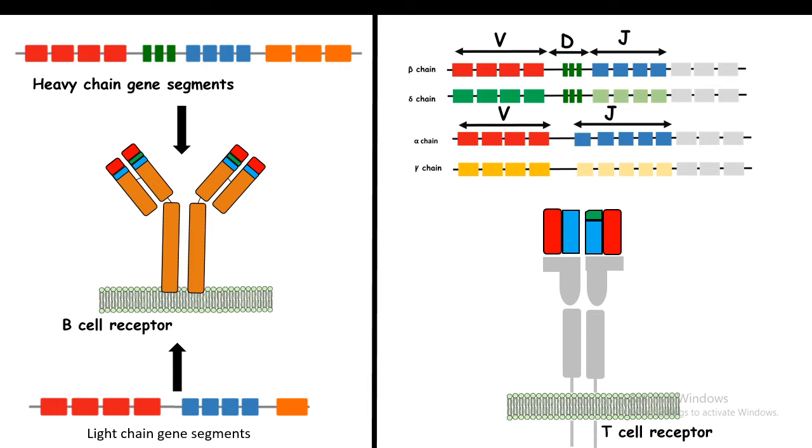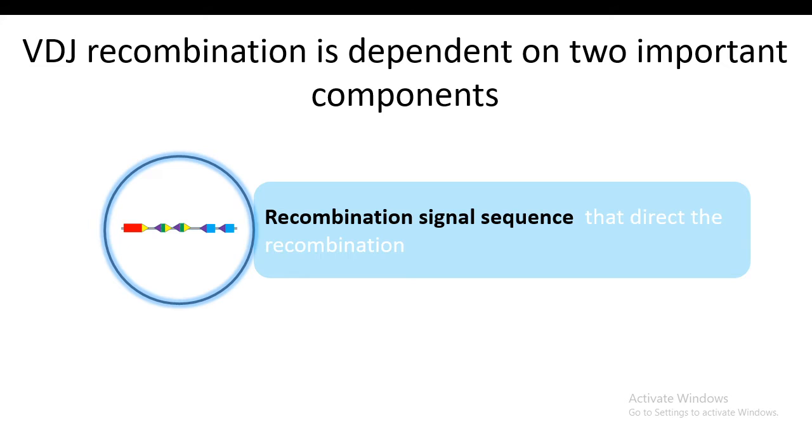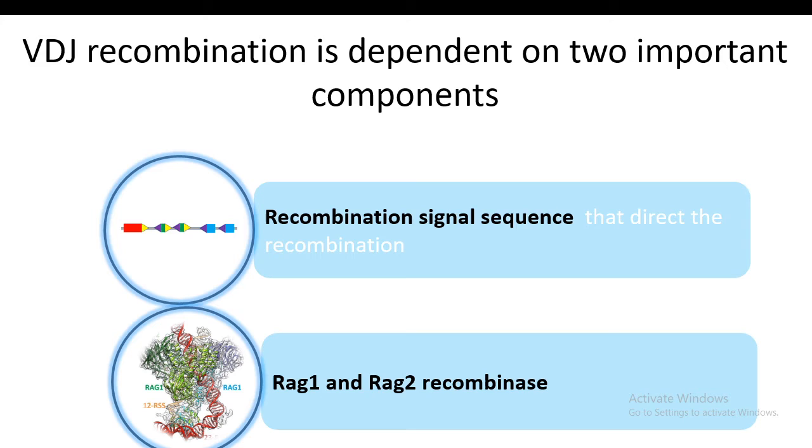VDJ recombination takes two important considerations. VDJ recombination's first and foremost criteria is to have signal sequences that would initiate the recombination process, and obviously RAG1 and RAG2 recombinase are important, because without the recombinase enzyme how would recombination take place? It turns out both these components are present in T cells, suggesting the possibility that T cells can undergo VDJ recombination as well, and this VDJ recombination is taking place in the TCR alpha and beta chains.